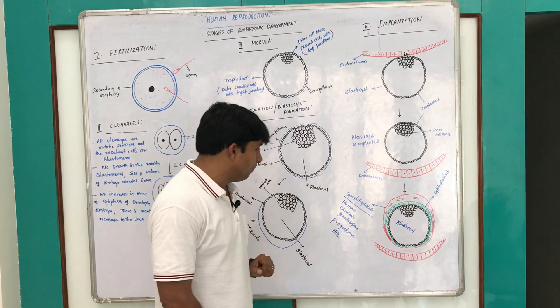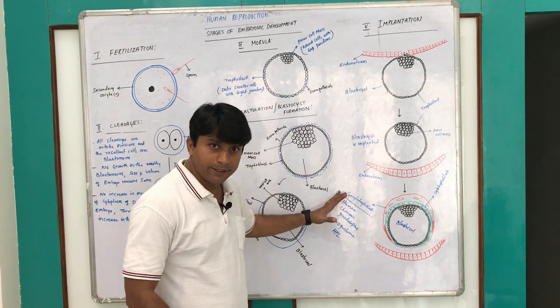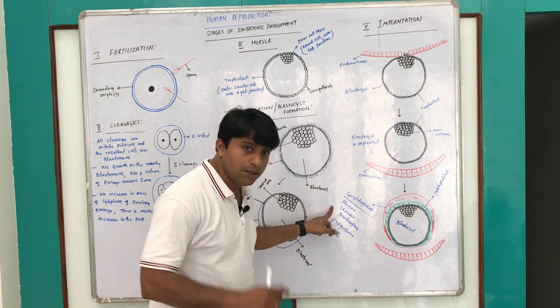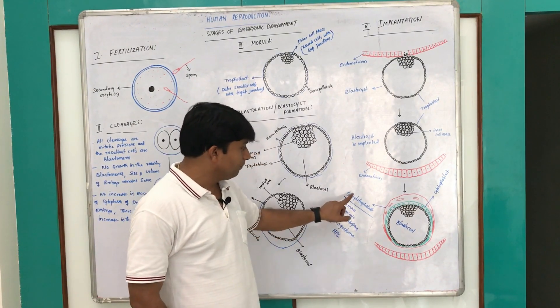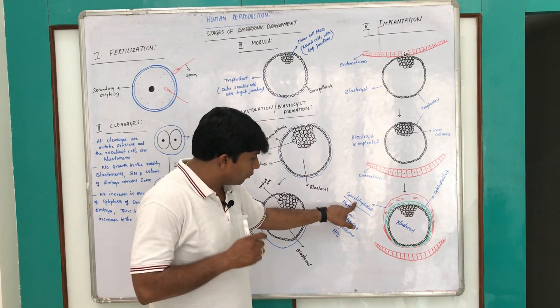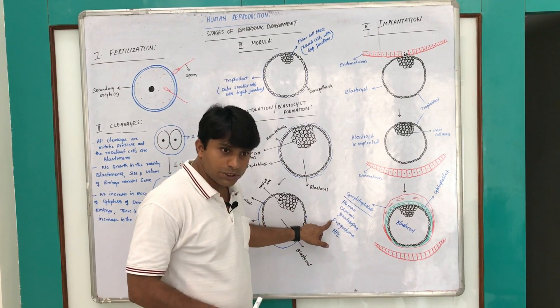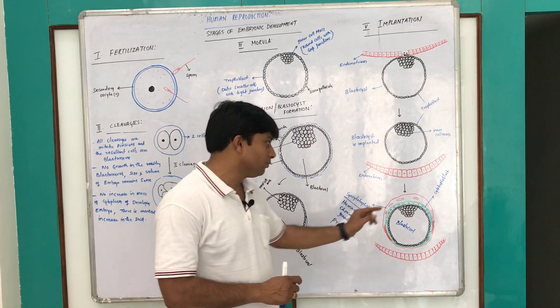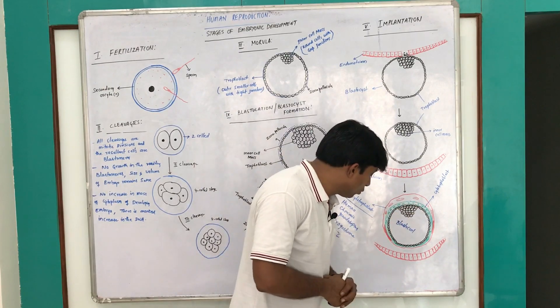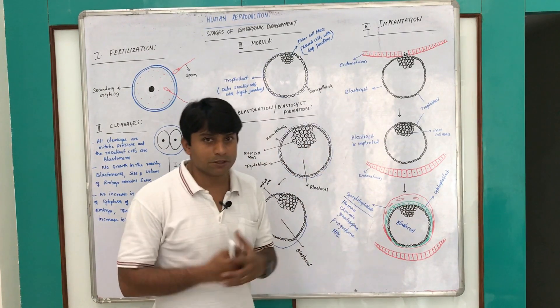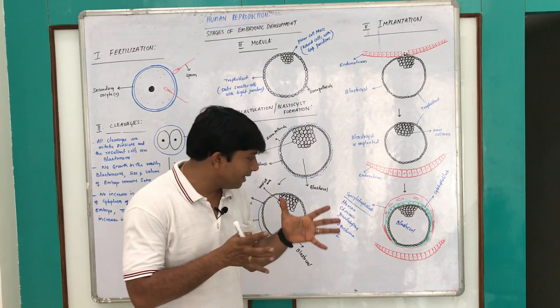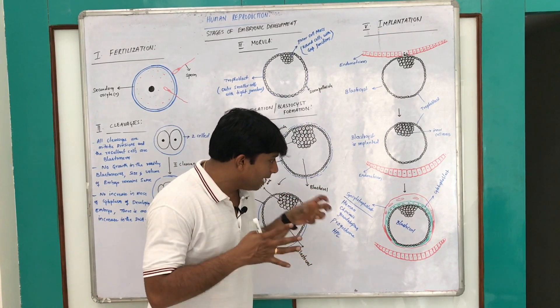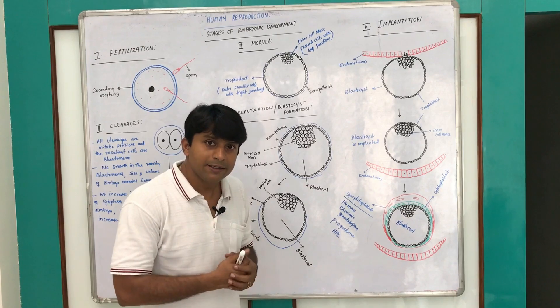Syncytiotrophoblast will secrete human chorionic gonadotropin, which maintains the corpus luteum, and also the syncytiotrophoblast secretes progesterone and human placental lactogen. Whereas the cytotrophoblast helps in the process of implantation and forms the villi and is useful for attaching to the uterine cavity.